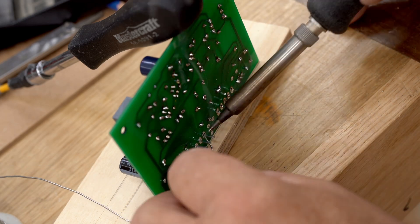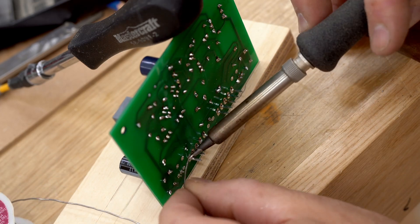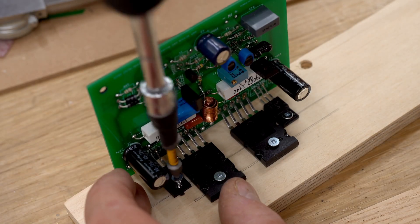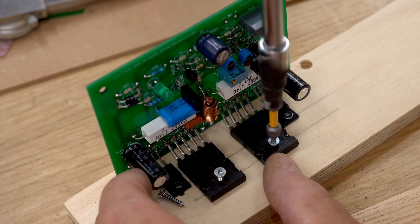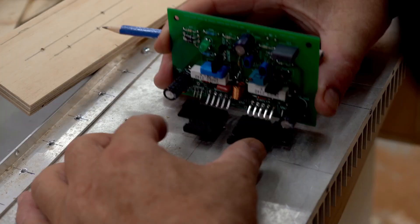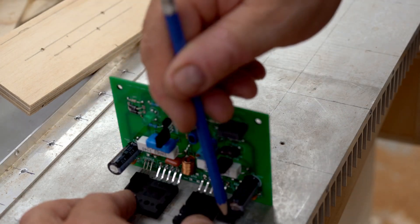Now I can get the drivers and the output transistors mounted. I set up a piece of plywood as a template so I can get these all in the right place, and that way all the boards will be exactly the same with the transistors in the same place. Now that I have it done, I can use that board as a template to mark out the mounting holes on the heatsink.